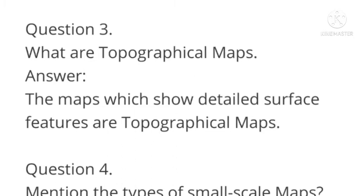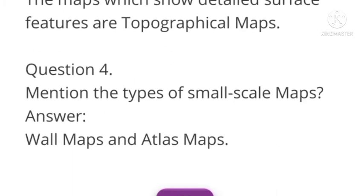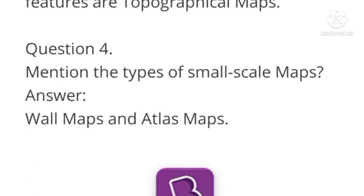Question number three: What are topographical maps? Answer: The maps which show detailed surface features are topographical maps. Question number four: Mention the types of small scale maps. Answer: Wall maps and atlas maps.